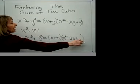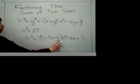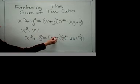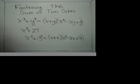And then plus, for this last term, you square this last term. So 3 squared gives me a plus 9 at the end. And that's the correct factorization of x cubed plus 27.